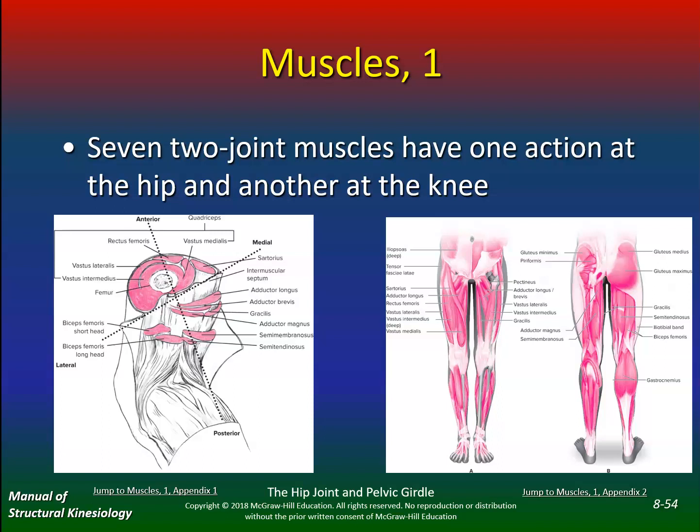Seven two-joint muscles have one action at the hip and another at the knee. Based on those movement presentations, you get to see all the different exercises involved in the muscles of the lower extremity. Most people hate leg day because it takes a lot of effort to fatigue these muscles, and it's not a very efficient system, as you know, based on first and third class levers.